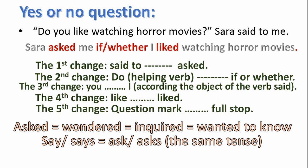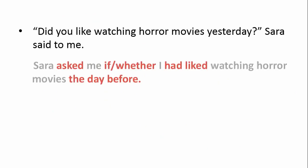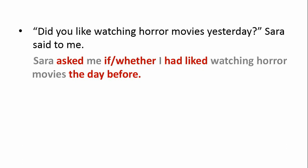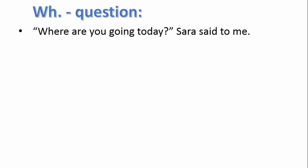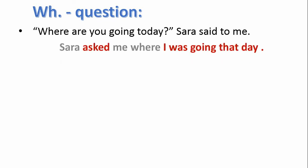Before the WH question — another example: 'Did you like watching horror movies yesterday?' Sara said to me → 'Sara asked me if/whether I had liked watching horror movies the day before.' All the same changes apply in question form as in statement form. For the WH question: 'Where are you going today?' Sara said to me → 'Sara asked me where I was going that day.' The WH question is very close to the yes/no question rules, but instead of 'if/whether' we use the WH question word.